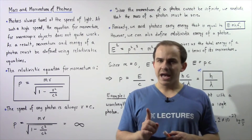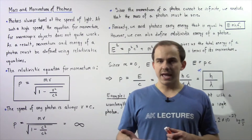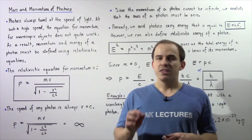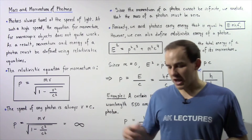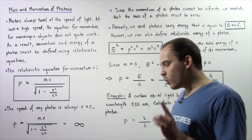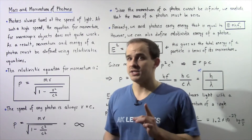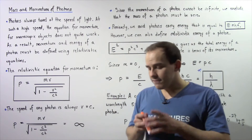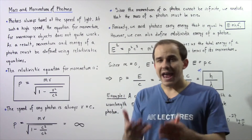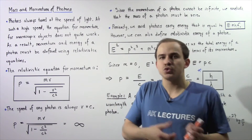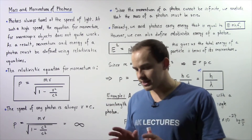Photons are very interesting in that they always travel at the speed of light. That makes sense because the quantum theory of light tells us that light consists of photons, which implies that photons travel at the speed of light. Photons are never stationary — you will never find a photon at rest. Even when a photon collides, say with an electron, the energy stored in the photon is transferred to that electron and the photon simply ceases to exist.